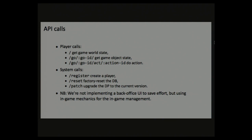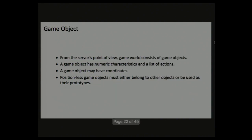The API has only three player calls: to get the game world state, to get a specific game object state, and to call a game object action. There are also a few system calls: to create a new player, to reset everything to factory state — which is often needed when prototyping — and to upgrade the database to the current version when you deploy new code and need to change the data. We are not implementing any back office UI to save effort; instead we use in-game mechanics for game management, so certain users can be made admin and through game actions they can change the world if they have the proper permissions.